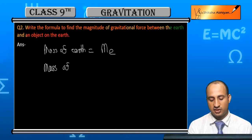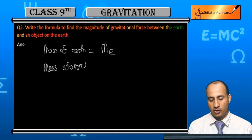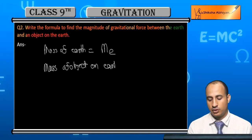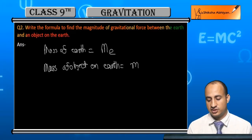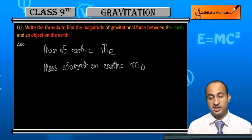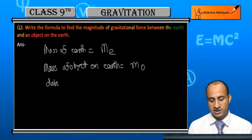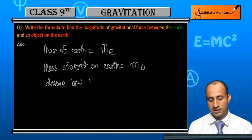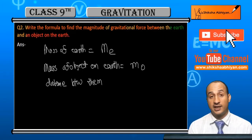Mass of object on earth, let me take this as M0, and distance between them, let me take this distance between them as r.